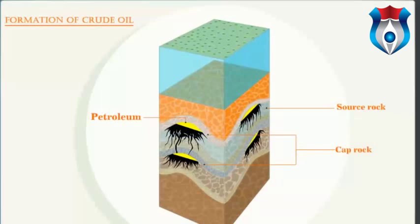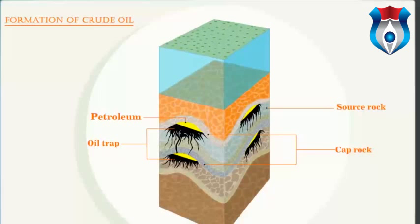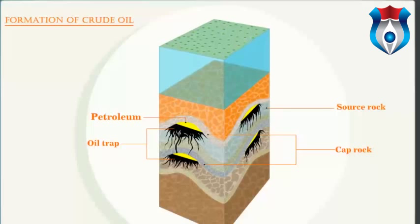Petroleum rises up in the source rock slowly to form a layer till it collects under the non-porous cap rock. This collection of petroleum is called an oil trap. Thus, petroleum occurs along with salt water and pressurized natural gas below the impervious rock layers in the porous rock strata, some 500 to 5,000 meters in the interior of the earth.